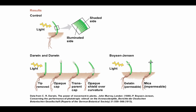Further experiments established that it was the tip initiating the response: cutting off the tip produced no response, and covering the tip with an opaque cap blocked the response, while a transparent cap allowed the phototropic response. Covering other parts of the growing shoot with an opaque cover still allowed the response — it's mediated only by cells within the tip. Subsequent experiments showed that a mobile chemical transmitted down through the plant was causing this response: using permeable gelatin between the tip and the rest of the shoot still allowed the response, but impermeable mica prevented it.